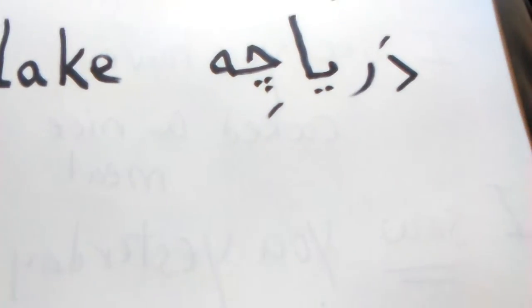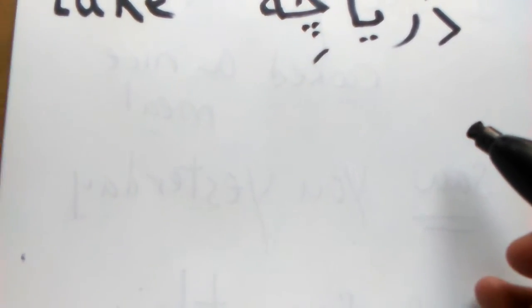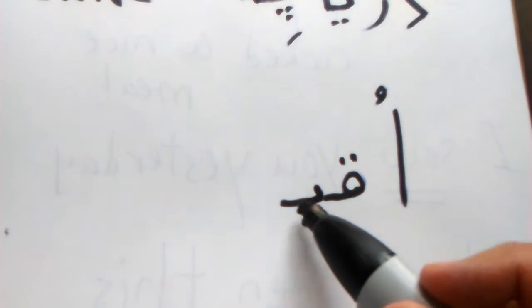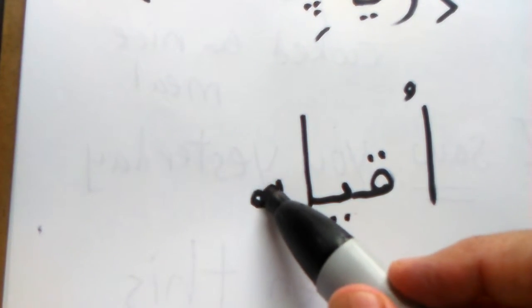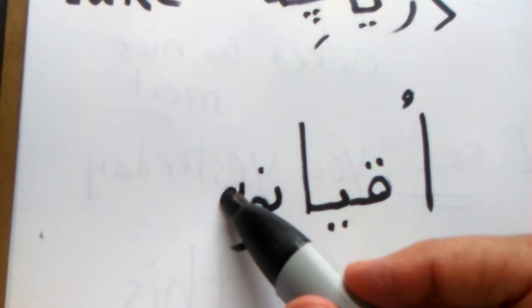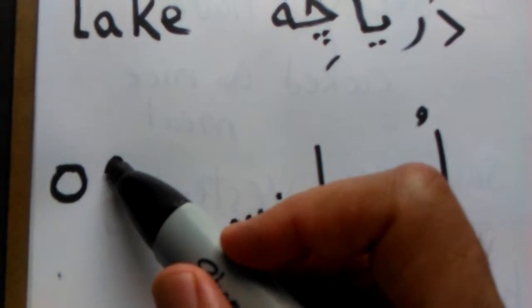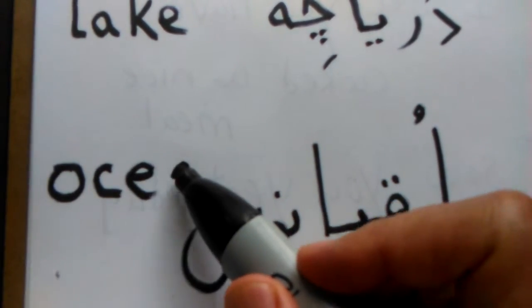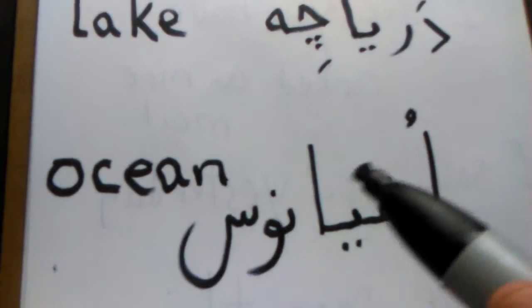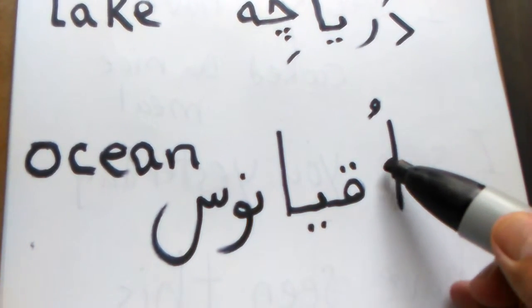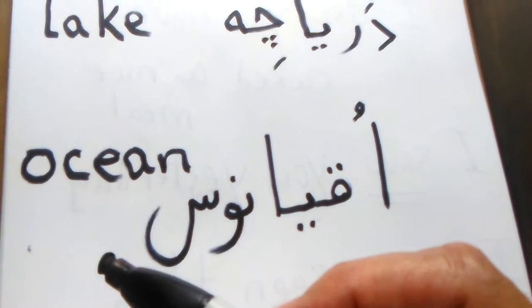Then, this is one of my favorite words, both in Farsi and in English. اقیانوس. O-G-Y-A-N-O-S. The ocean. I love this word. اقیانوس, which means the ocean.